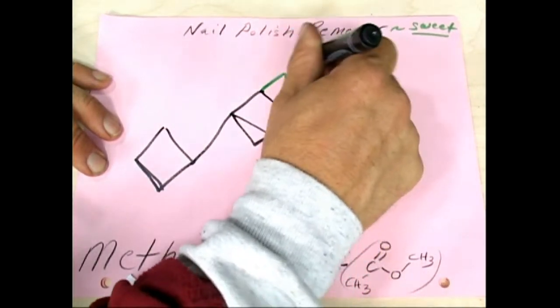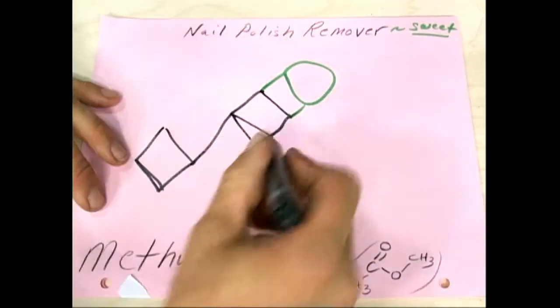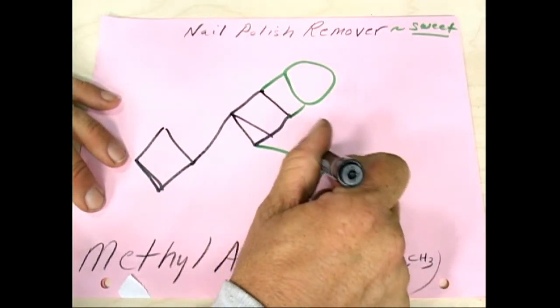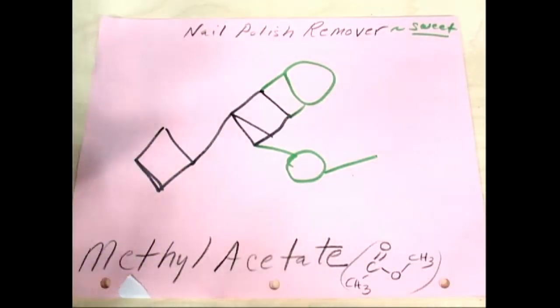So we're going to put the oxygen first so we can make sure the diamond's pointing in the right way. It goes to an O. This goes up to another methyl.